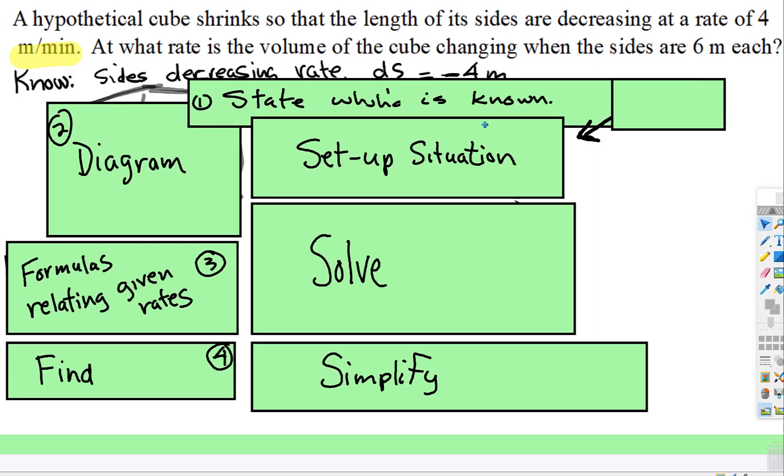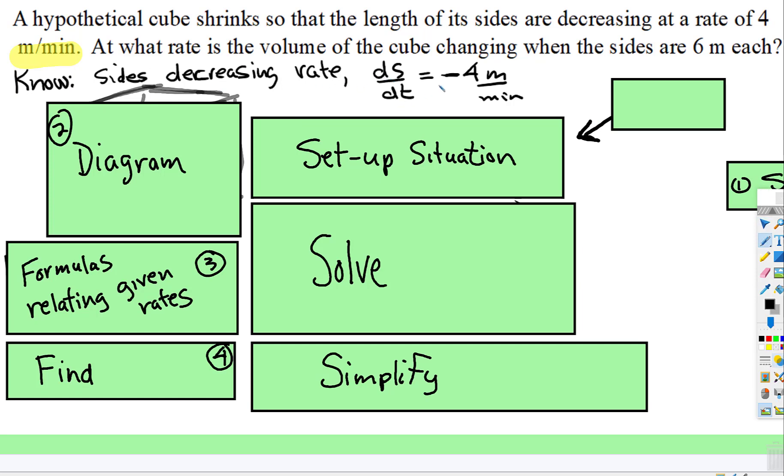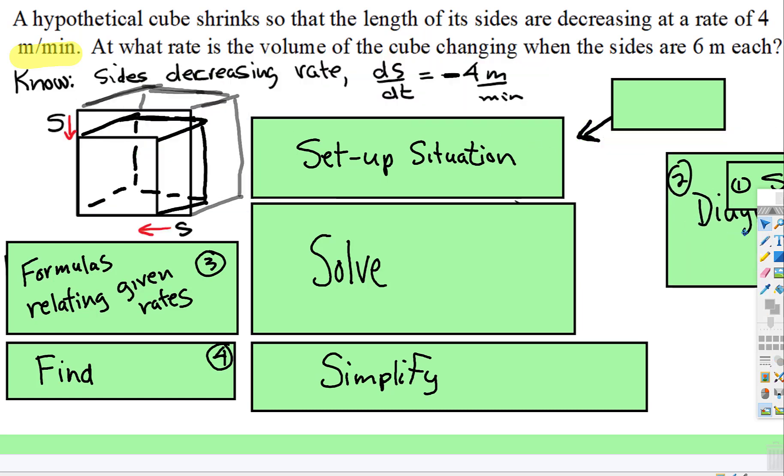So state what we know. Sides are decreasing, so ds/dt is negative four. Remember when something's decreasing, it's a negative rate. So you put in negative four meters per minute. Draw the diagram. So there's our cube, except this time this is the larger one and it's shrinking.